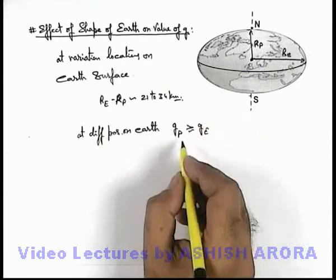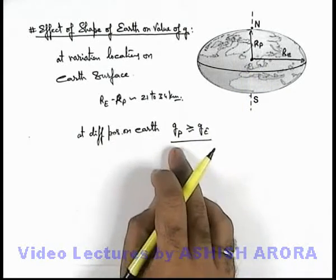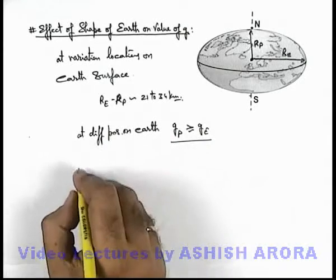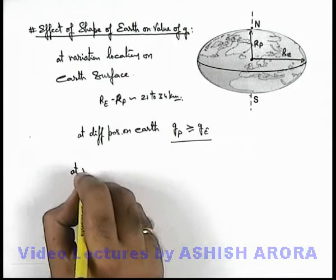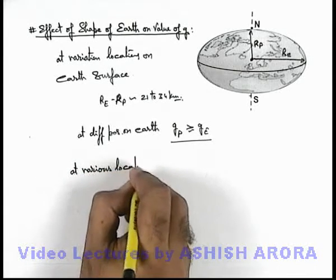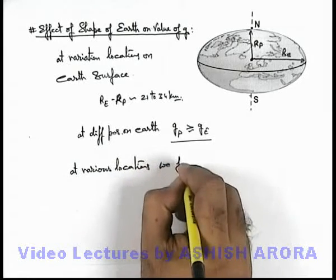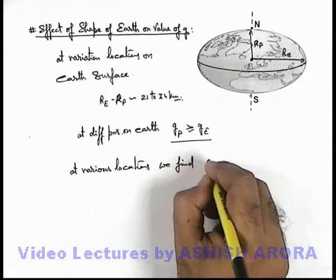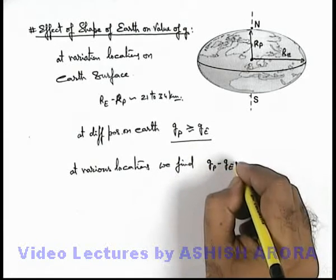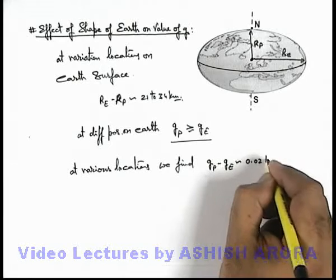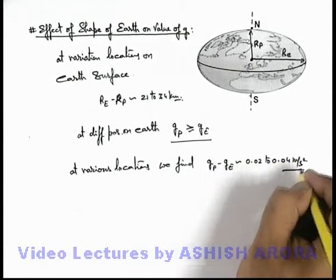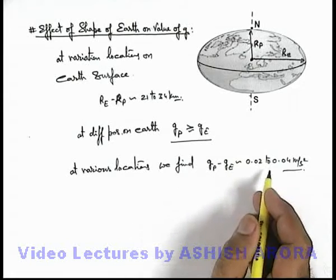In this situation, if we measure the value of gravity at poles and gravity at equator, at various locations we find that g-p minus g-e, the difference in the two values, is approximately from zero point zero two to zero point zero four meter per second square. This is experimentally obtained at various points.